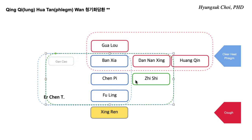Tao Tan Tang with Gu Lu and Huang Qin. What does Huang Qin do? Clear heat. So this is Tao Tan Tang with a clearing function — clearing action with Huang Qin. And Gu Lu — what does it do? Remove phlegm by moisturizing, moistening the phlegm. Gu Lu.